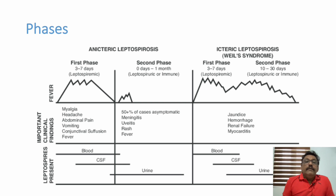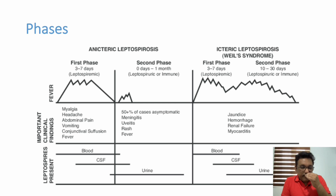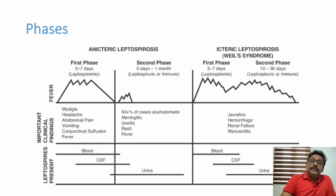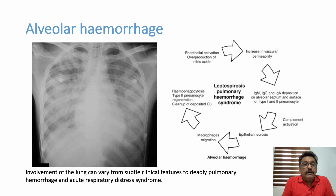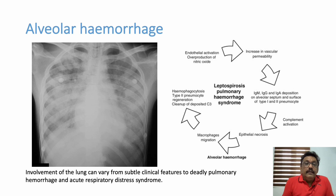In the anicteric phase, then the icteric phase — jaundice, hemorrhages, renal failure, myocarditis, encephalitis — these are all due to the immune-mediated phase, which we call icteric leptospirosis or Weil's syndrome. The lungs are involved in different ways: simple pulmonary infiltrates with mild hypoxemia, ARDS-like bilateral diffuse infiltrates, or rarely pulmonary hemorrhage, which carries very high mortality. Whenever you see a patient with leptospirosis and a very bad chest X-ray showing bilateral white shadows throughout the lung fields, the mortality rate is very high.